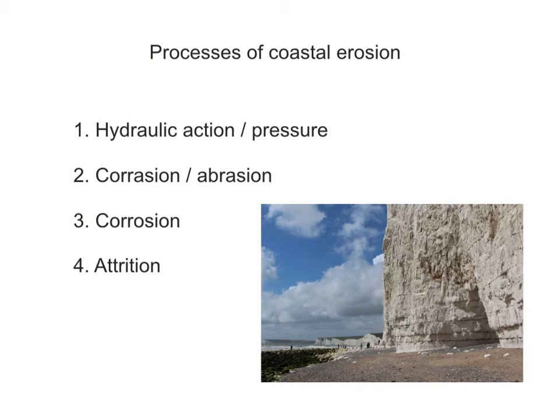This tutorial is about the processes of coastal erosion, of which there are four. Number one, hydraulic action or pressure. Number two, corrasion or abrasion. Number three, corrosion. And number four, attrition.